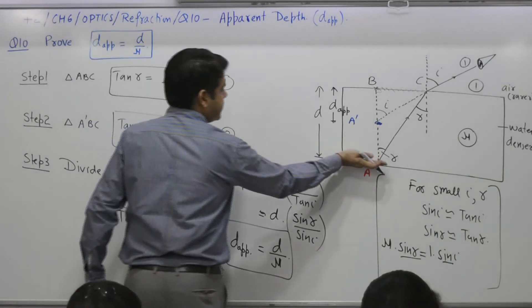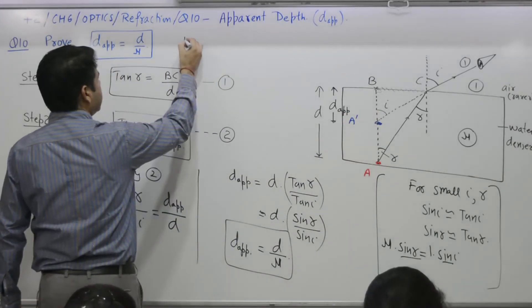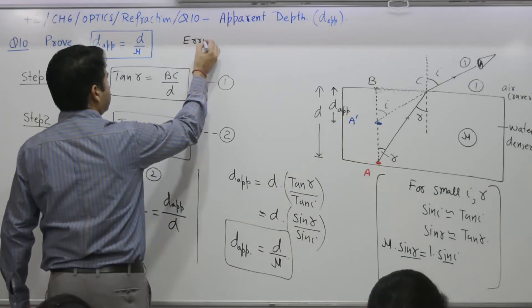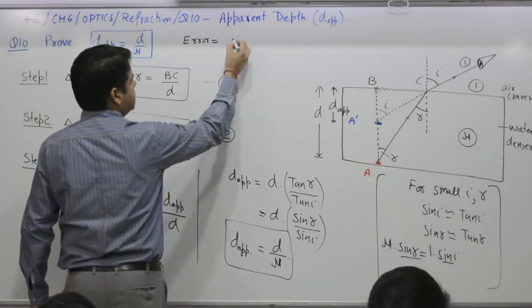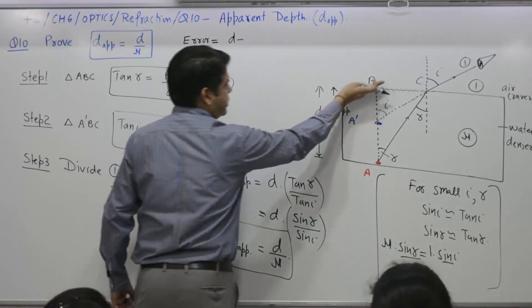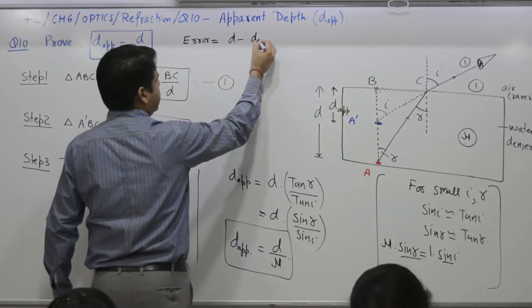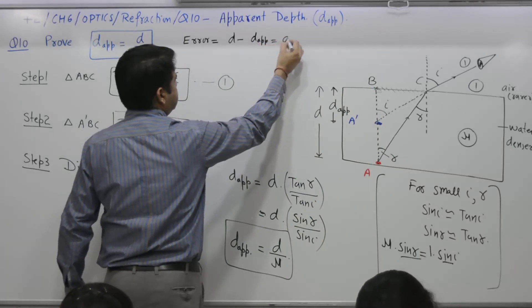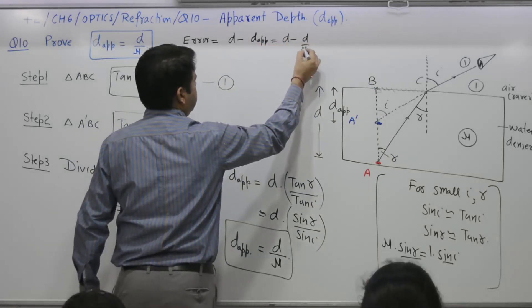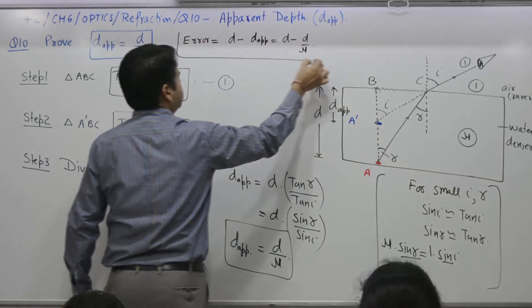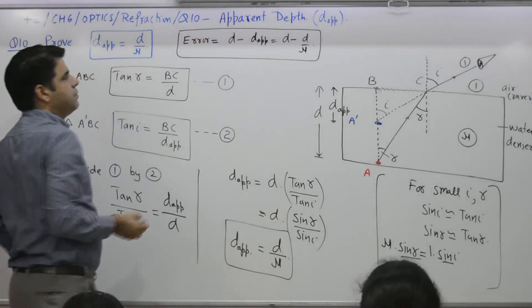And this error is equal to what? D actual minus D apparent is equal to D minus D by nu.